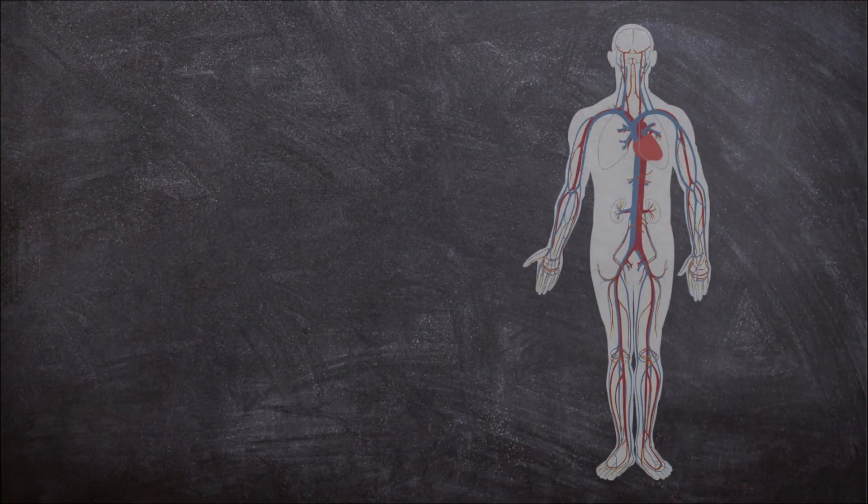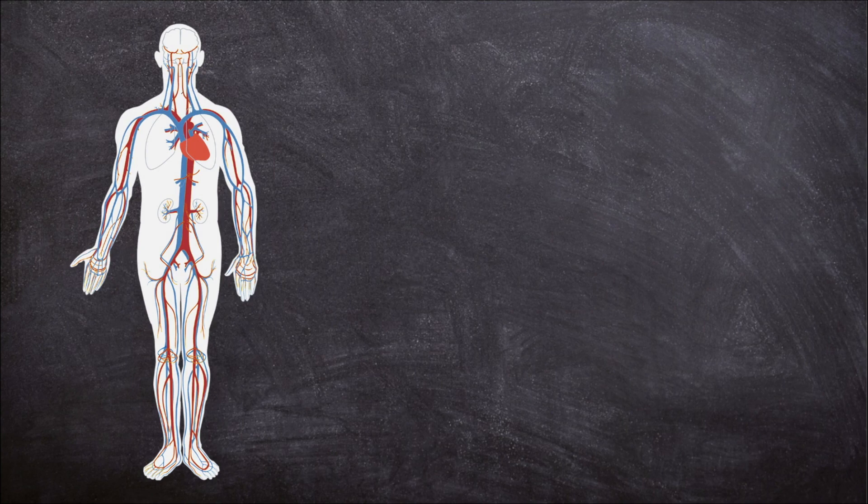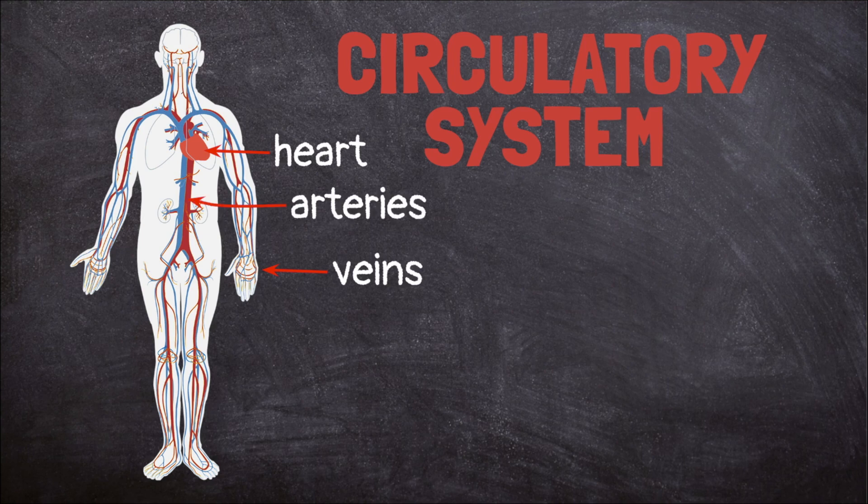Our blood has to reach every cell in our bodies to deliver the nutrients and oxygen it carries. The circulatory system is what moves the blood around. This system is made up of the heart, veins, and arteries.